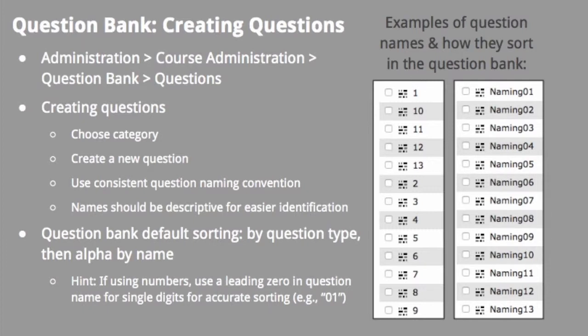Questions may be created in the question bank itself, or questions may be created while in a quiz. If creating quiz questions while in a quiz, best practice is to create the categories in the question bank first, then assign the questions to the proper category during creation. Otherwise, quiz questions will go into the default category for that particular quiz, which is not accessible from the course question bank.